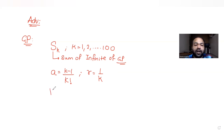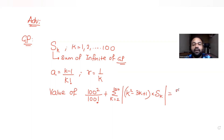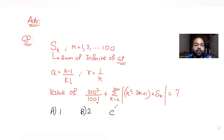We have been asked to find the value of an expression: 100² divided by 100 factorial, plus the summation from k=2 to 100 of (k²-3k+1) multiplied with S_k. The options given are: A) 1, B) 2, C) 3, D) 4. We need to find the correct answer.